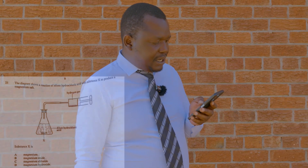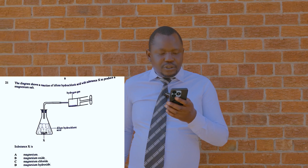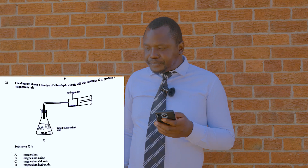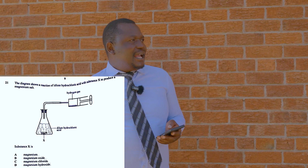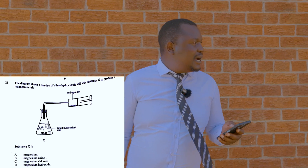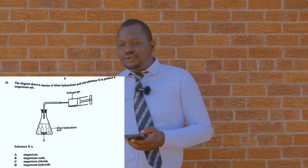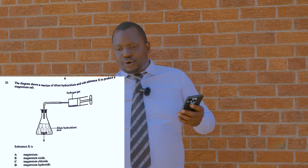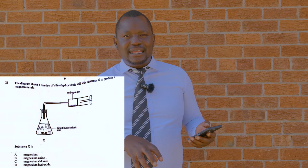Question 21: the diagram shows a reaction between dilute hydrochloric acid and substance X to produce a magnesium salt. When magnesium reacts with hydrochloric acid, we get magnesium chloride plus hydrogen gas — a metal-acid reaction. Alternatively, magnesium oxide reacted with hydrochloric acid gives magnesium chloride plus water — a neutralization reaction, since magnesium oxide is a base and hydrochloric acid is an acid.